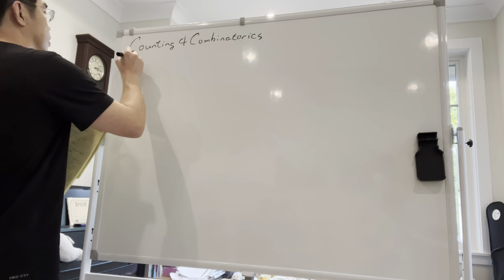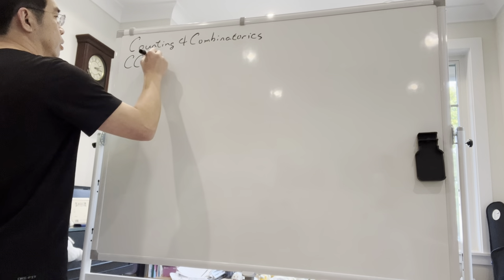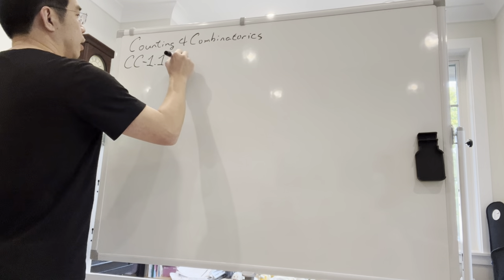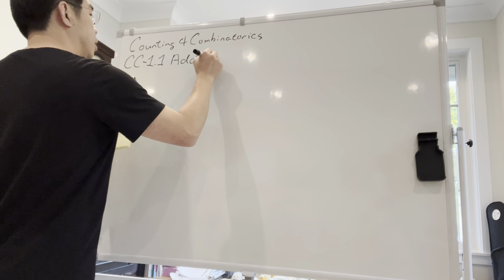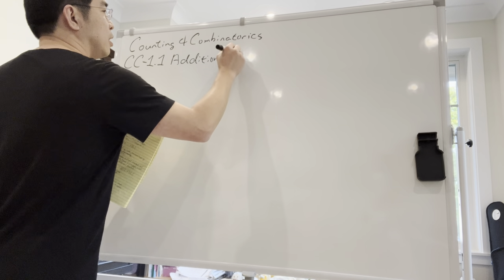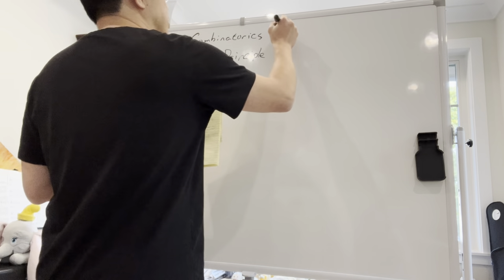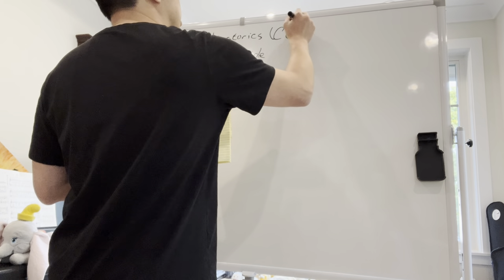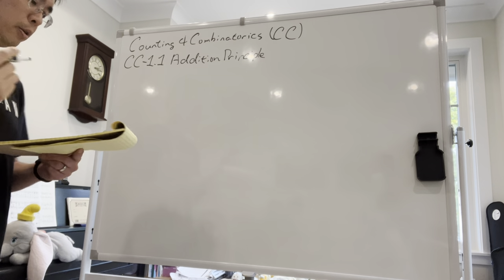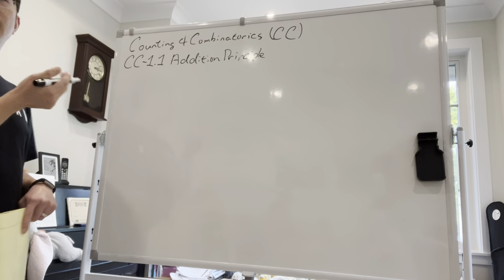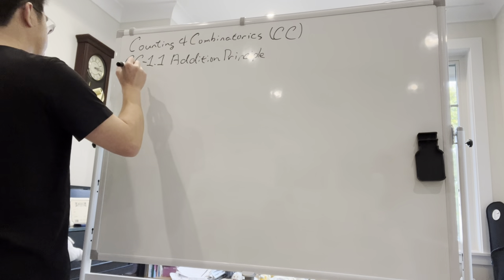The first one is called the addition principle. After the everyday English interpretation of the formula, we'll do some examples to illustrate what kinds of counting problems you can apply that principle to. I'm going to talk about the mathematical version of this first.